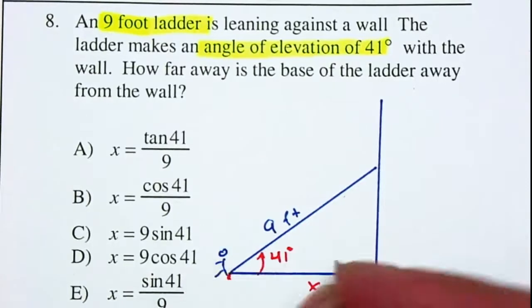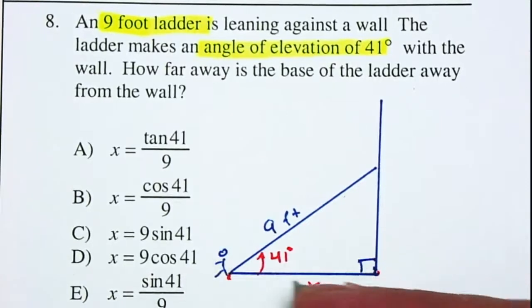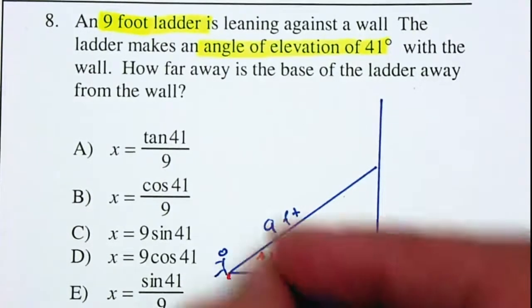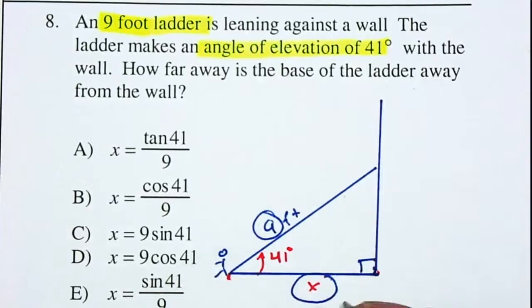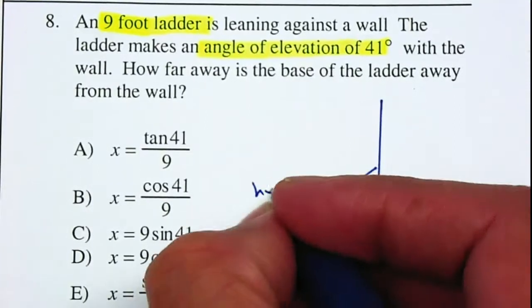Since you are standing here, and this is the angle that they give you, and we have a 90 degree angle, we are going to be using the X and the nine. Your X will be your adjacent and your nine will be your hypotenuse.